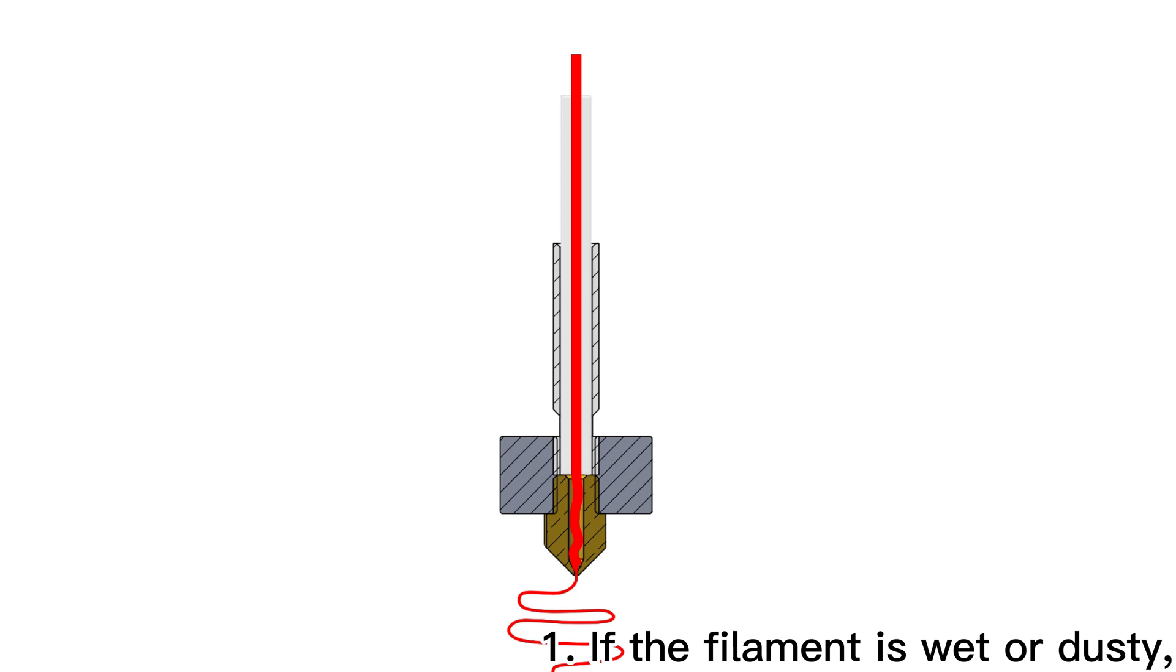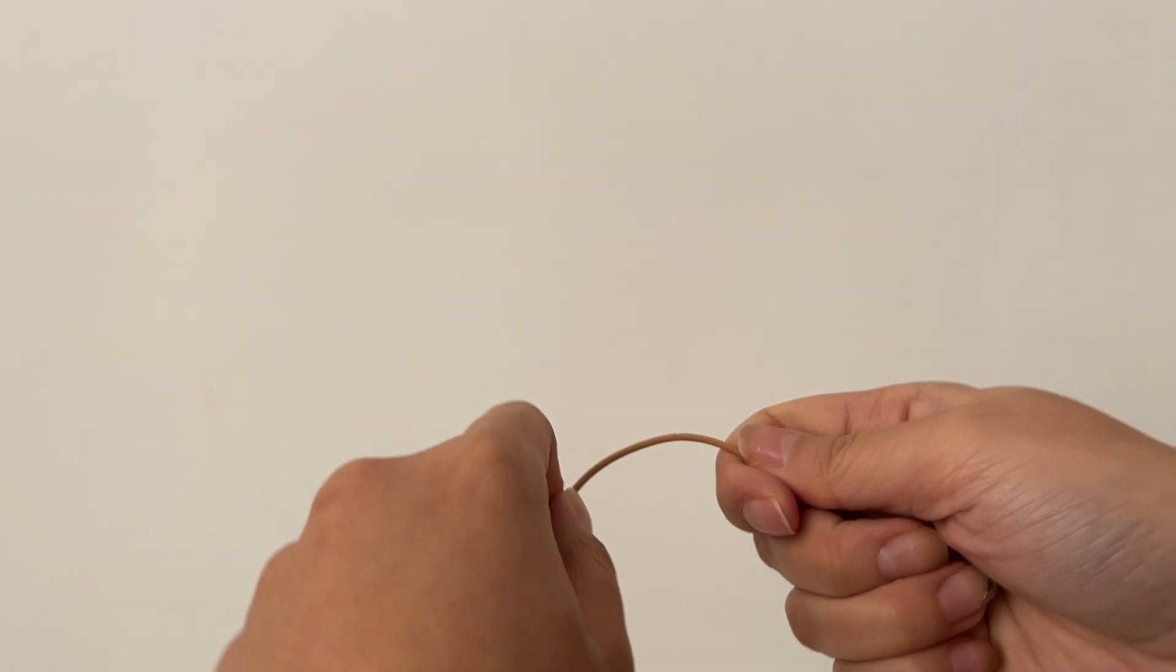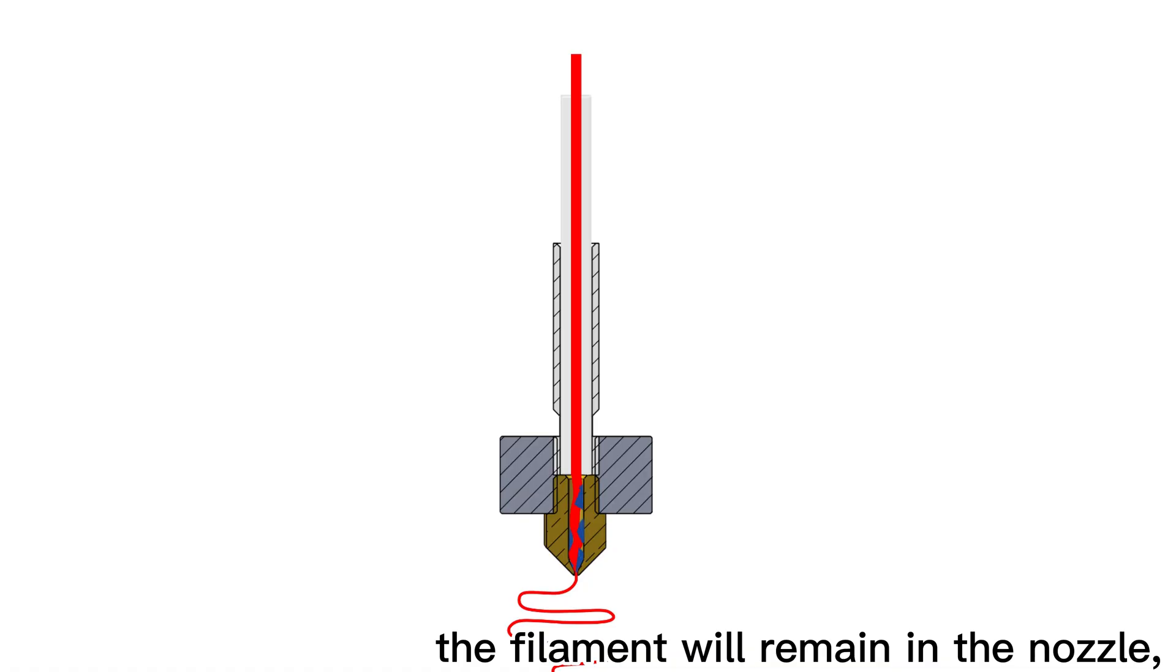1. If the filament is wet or dusty, the filament will remain in the nozzle, causing blockage.